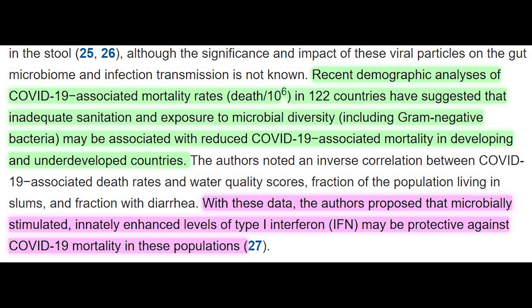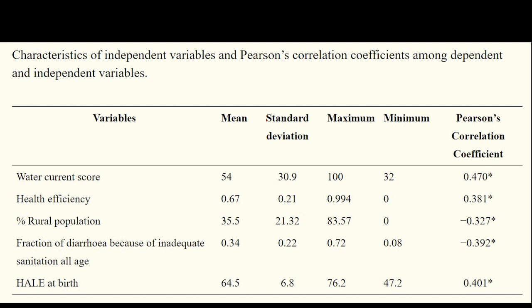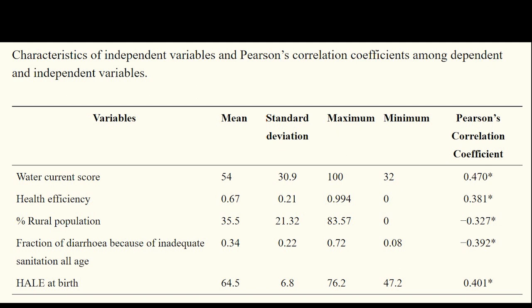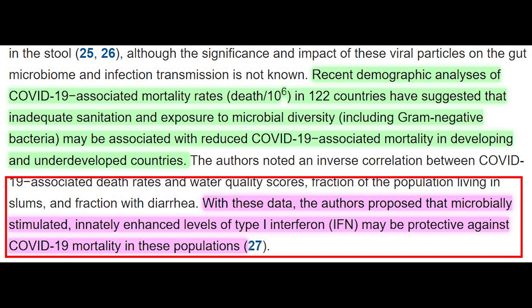And so although the evidence is a bit sparse at the moment, a recent demographic analysis of COVID-19 associated mortality rates in 122 countries have suggested that inadequate sanitation and exposure to microbial diversity may be associated with reduced COVID-19 associated mortality. And so in the study, they noted an inverse correlation between COVID-19 associated death rates and water quality scores. And so the authors of the study proposed that microbially stimulated, innately enhanced levels of type 1 interferon may be protective against COVID-19 mortality in these populations.